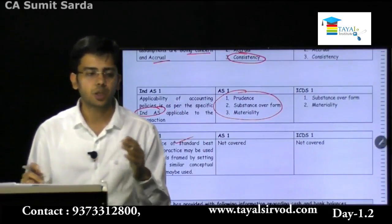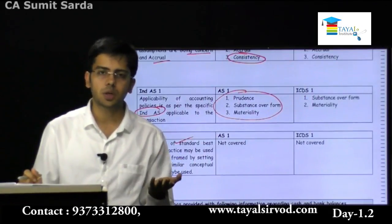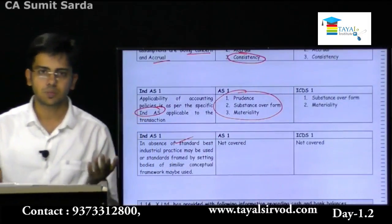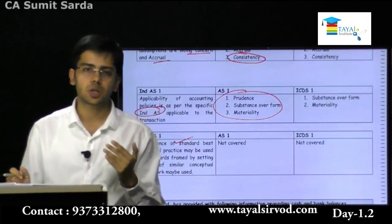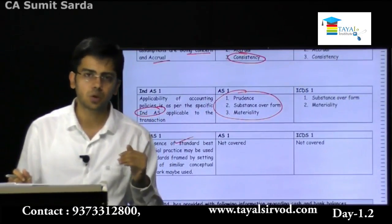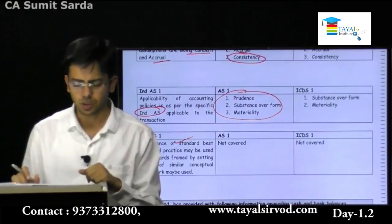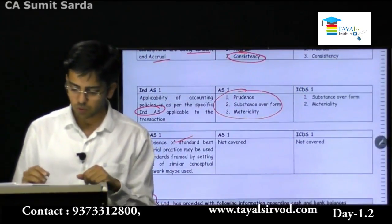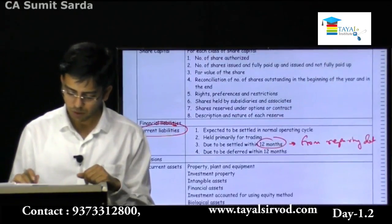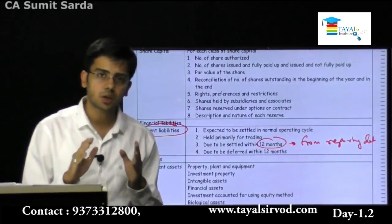In the absence of a specific Indian accounting standard on any particular aspect, the hierarchy is: first refer to guidance notes available, then International Accounting Standards (IAS), then US GAAP, and finally best industrial practice - how competitors and other players are accounting for the same item. The company can also approach ICAI, which may come up with a new Indian accounting standard. We will now move towards understanding what is operating cycle under Indian accounting standard.